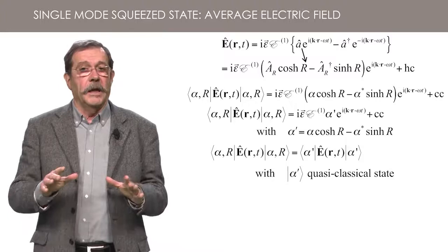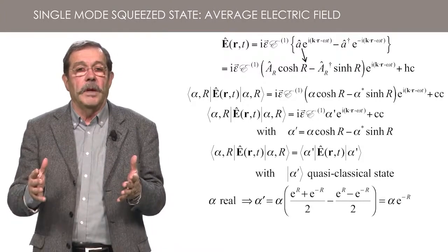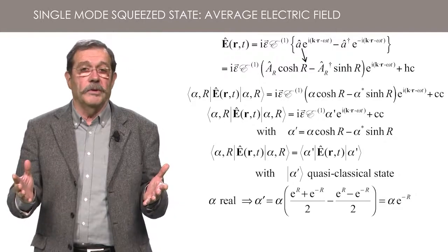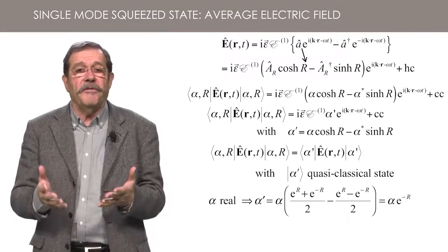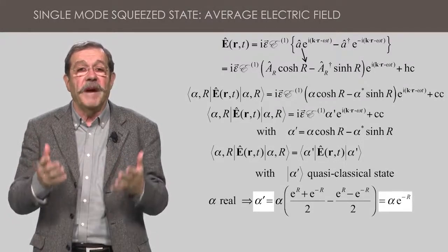In the following, we will often consider the case when alpha is real. Alpha prime is then also real and assumes a simple form alpha times exponential of minus R.